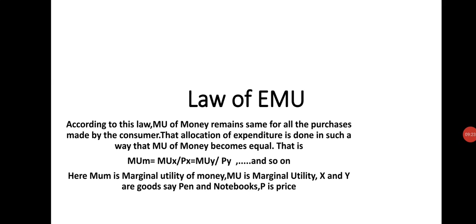Now, taking the second law of utility — that is, the law of EMU, equi-marginal utility. According to this law, the marginal utility of money remains the same for all purchases made by the consumer. That is, the allocation of expenditure is made in such a way that marginal utility of money remains the same. This is attained by dividing the marginal utility of good x by the price of good x. If there are two goods, good x and good y, the marginal utility of money for both goods should be same: MUM = MUx / Px = MUy / Py, and so on for as many goods as we want.